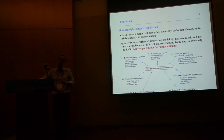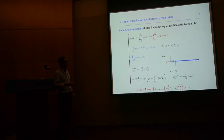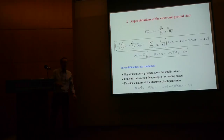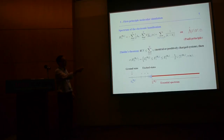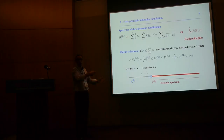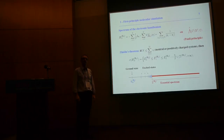I didn't mention spin for the sake of simplicity. Of course, the wave function ψ₀ is not only a function of the positions of the particles, but also of their spin. What you have to do is replace the one-particle space by L²(ℝ³, ℂ²) to account for spin. This is extremely important, and in fact all the numerical results I presented were obtained with models that include spin.